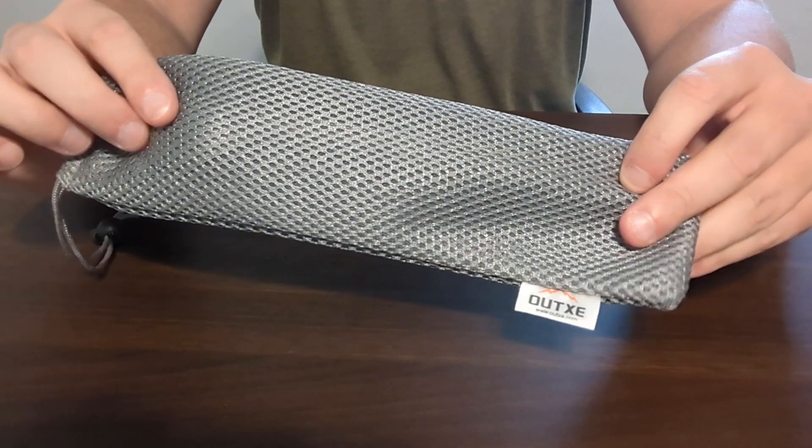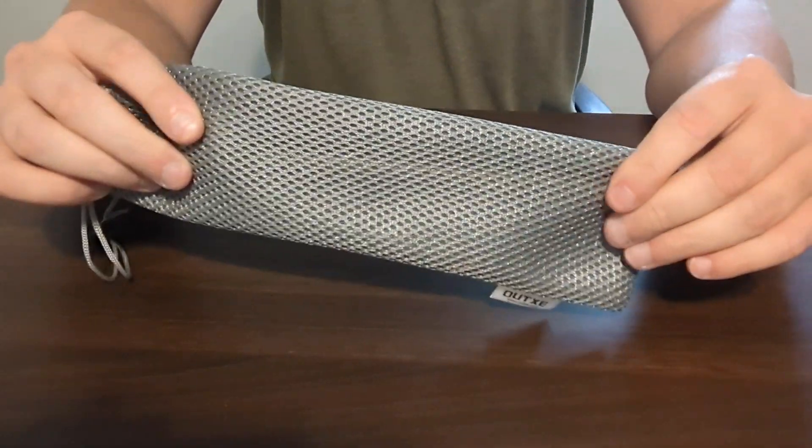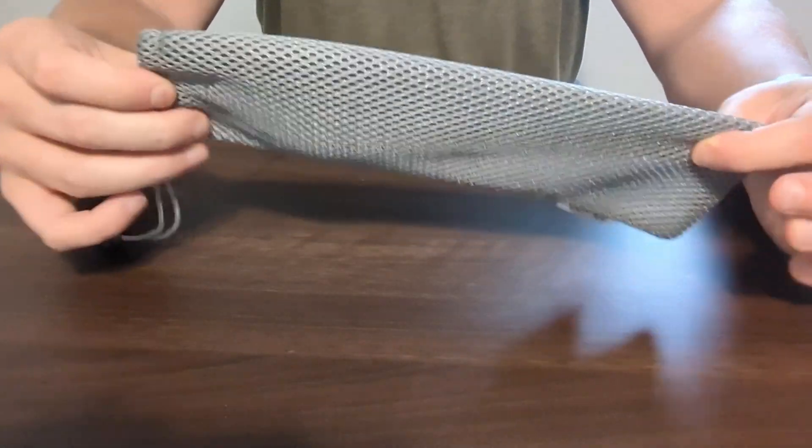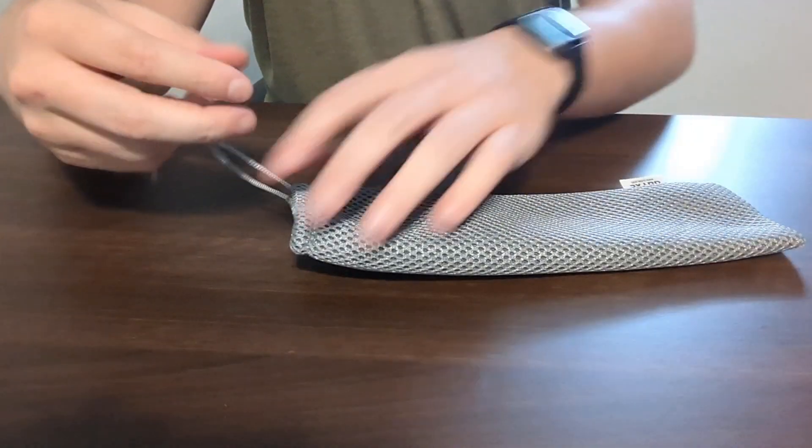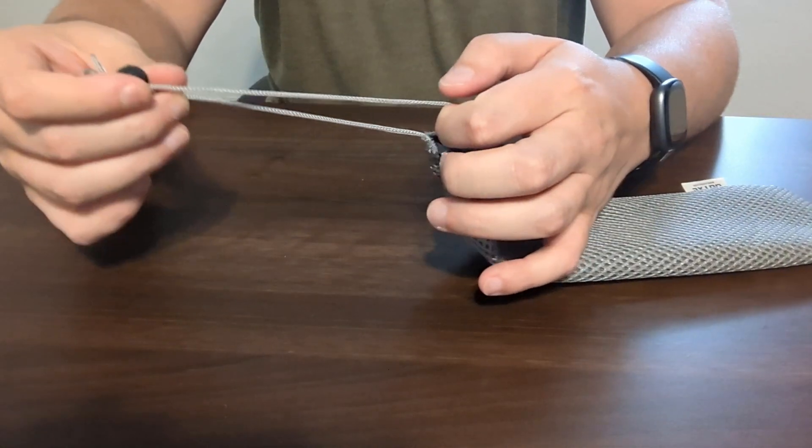This is the OutXE. The one I have is the long spoon and fork version. It comes in this pretty cool little mesh bag. I really like it because with this drawstring I can tie it around my waist.